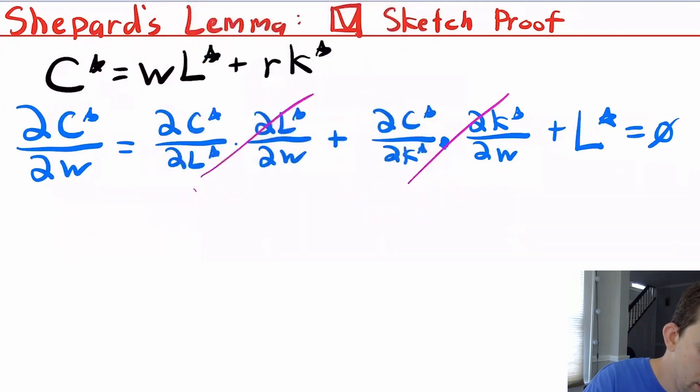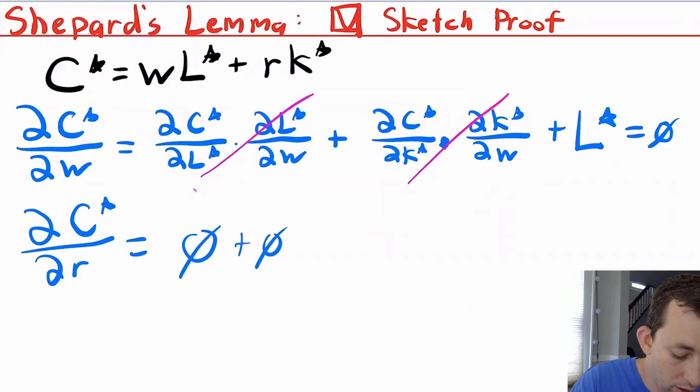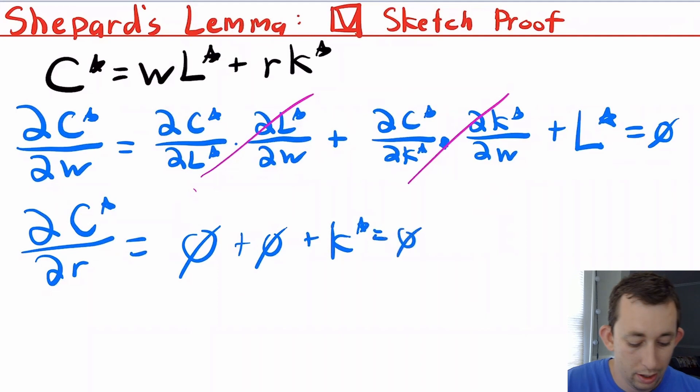If we were to do the same thing, we could say that DC star DR is also zero plus zero, where these zeros are DC/DL times DL/DR, DC/DK times DK/DR, plus K star is equal to zero. So that's how we can use Shepard's Lemma for the cost minimization problem using the envelope theorem. And that is just roughly how we deal with Lagrangian cost minimization.